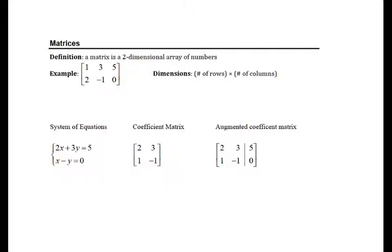We start matrices with an introduction and a brief definition. A matrix is a two-dimensional array of numbers, which means they're laid out in a grid pattern, like we see here in this rectangular array of numbers.